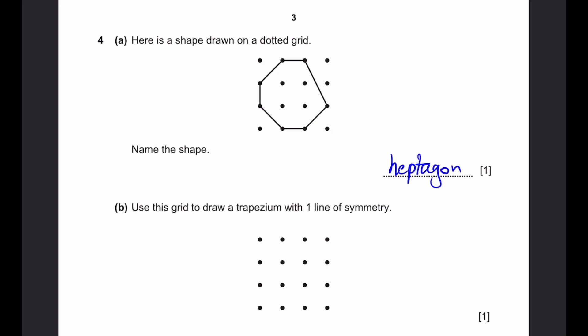Part B. Use this grid to draw a trapezium with one line of symmetry. That means you have to draw an isosceles trapezium. You can draw it like this, and the line of symmetry is over here.